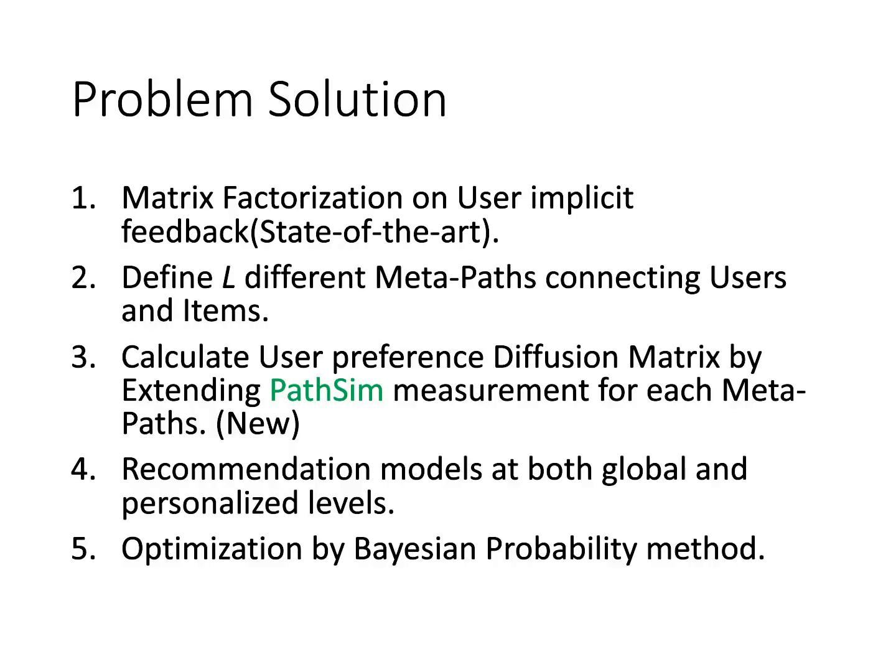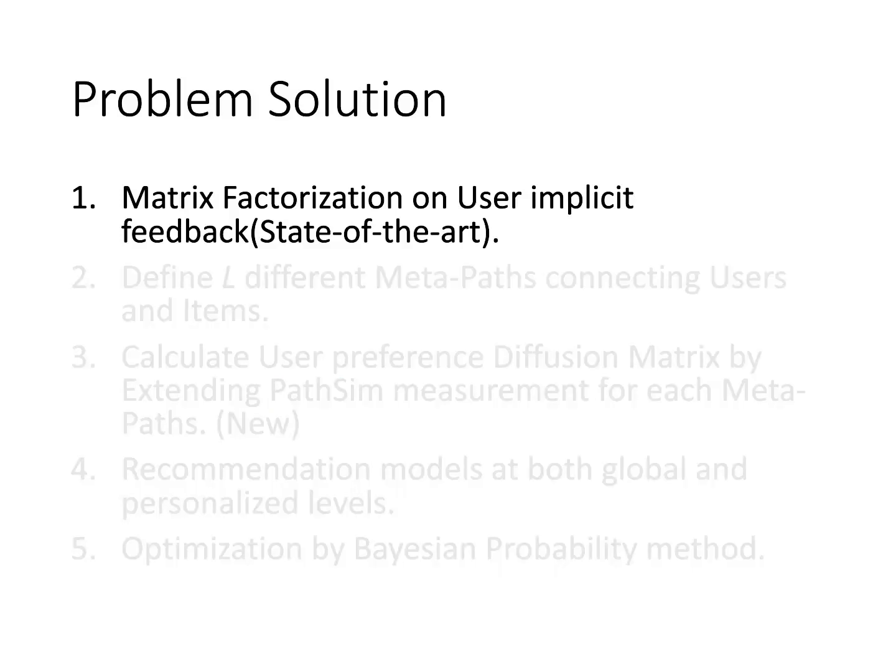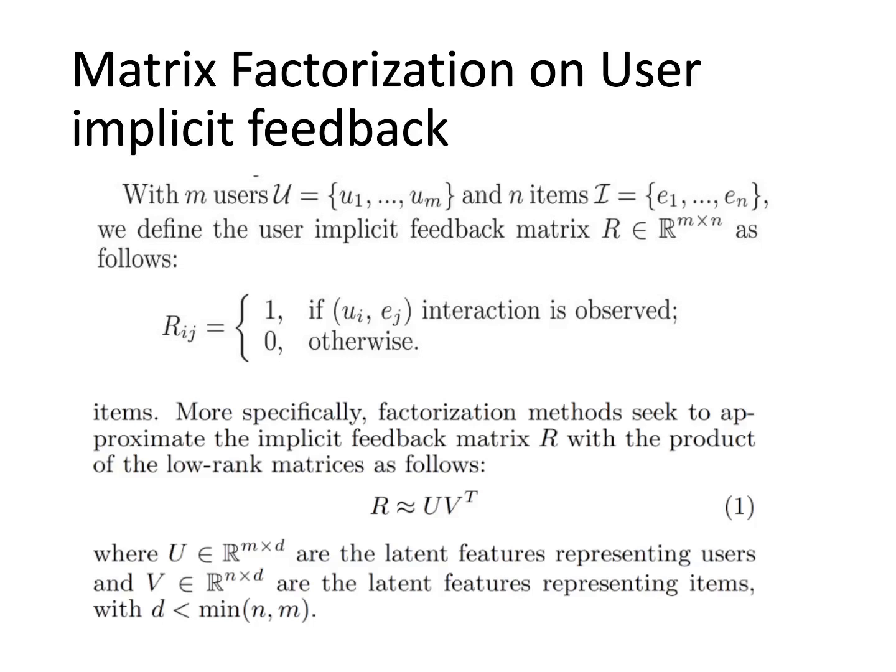They proposed a solution with five steps: first, use state-of-the-art matrix factorization; second, define all different metapaths connecting users and items; third, calculate user preference with an efficient diffusion matrix; fourth, define a recommendation model; and finally, optimize the recommendation using a Bayesian probability method.